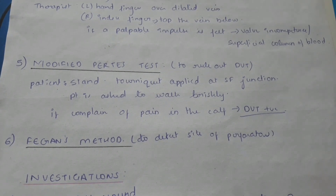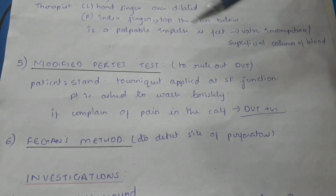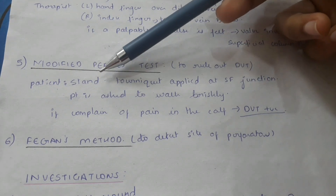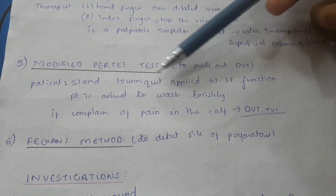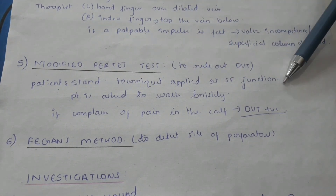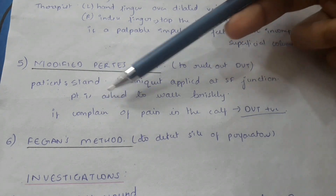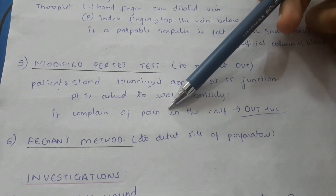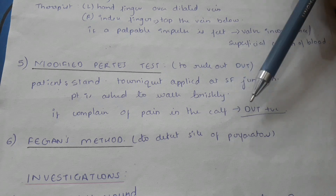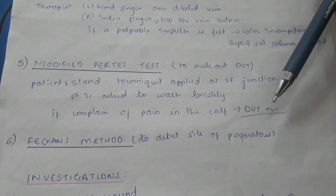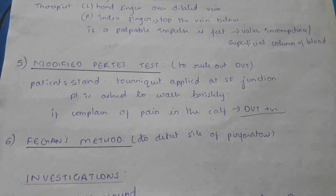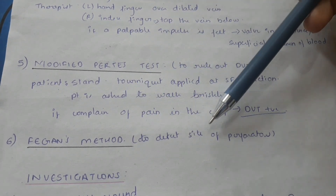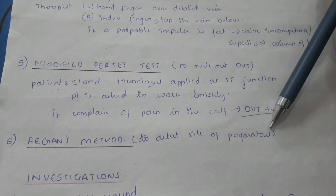The Modified Perth test is done to rule out deep vein thrombosis. The patient stands upright; a tourniquet is placed at the saphenofemoral junction, and the patient is asked to walk briskly. If the patient complains of pain in the calf muscle, DVT is considered positive. The Figgins method is also done to detect the site of the perforators.